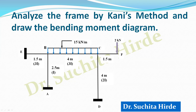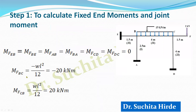In the analysis using Kani's method, the first step is always to calculate the fixed end moment and the joint moment. For members EB, AB, and CD, since there is no load, the fixed end moments are zero. For member BC, since it has a uniformly distributed load, the moments are -WL²/12 and +WL²/12, giving us -20 kNm and +20 kNm as fixed end moments.